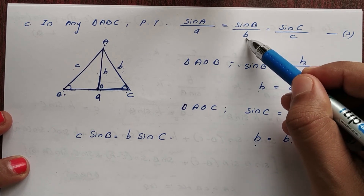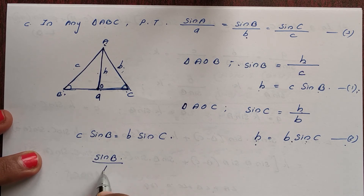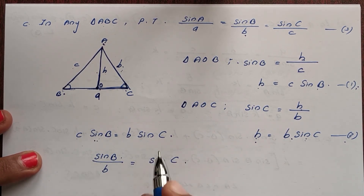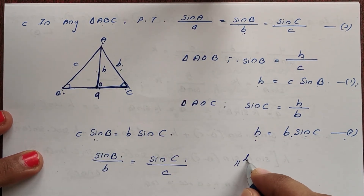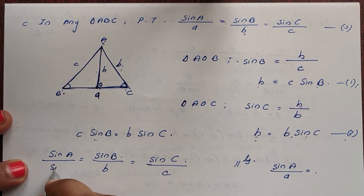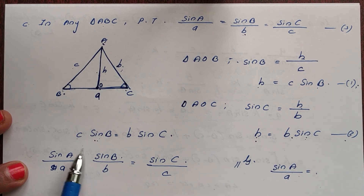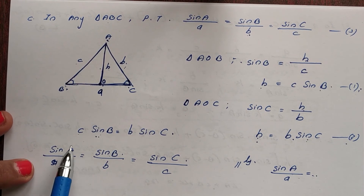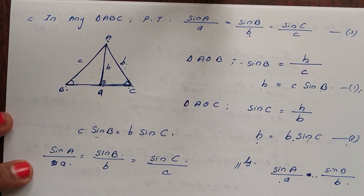Similarly, we need to prove sin A over a equals sin B over b. By the same method, drawing a perpendicular from B, we can show sin A over a equals sin B over b. Therefore, sin A over a equals sin B over b equals sin C over c. Hence proved.